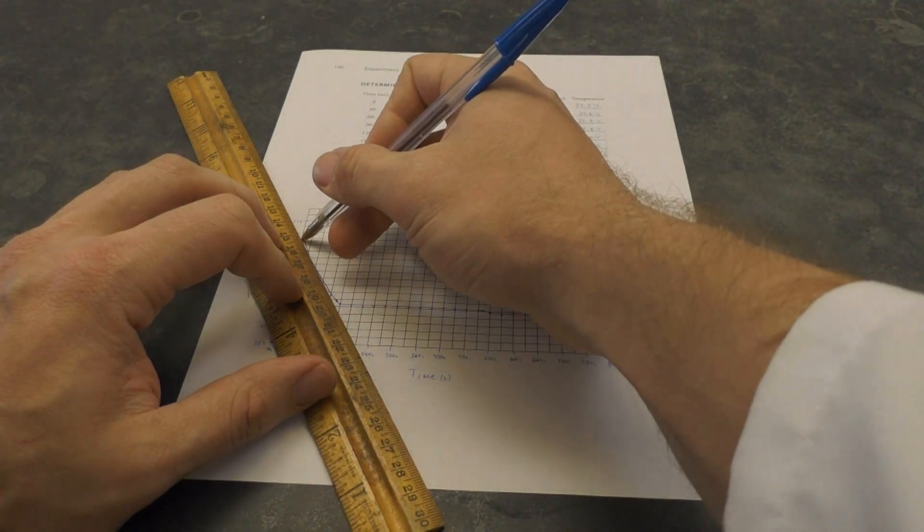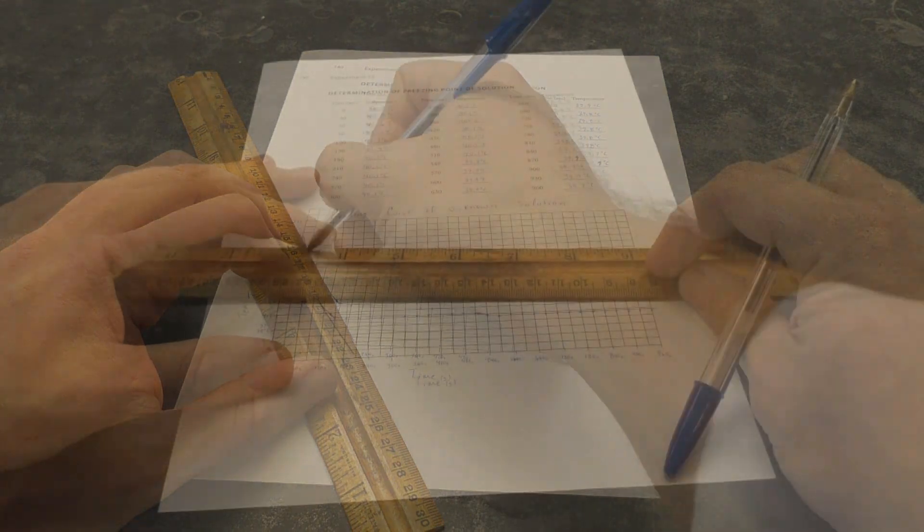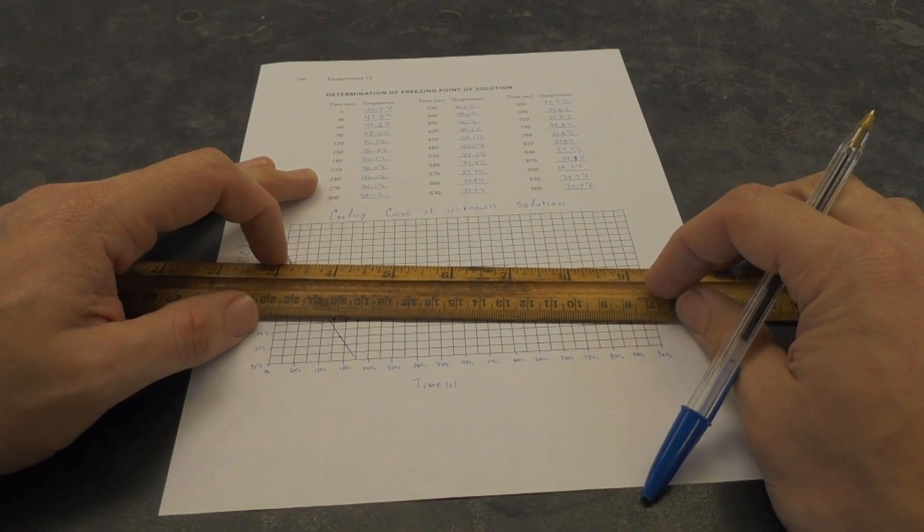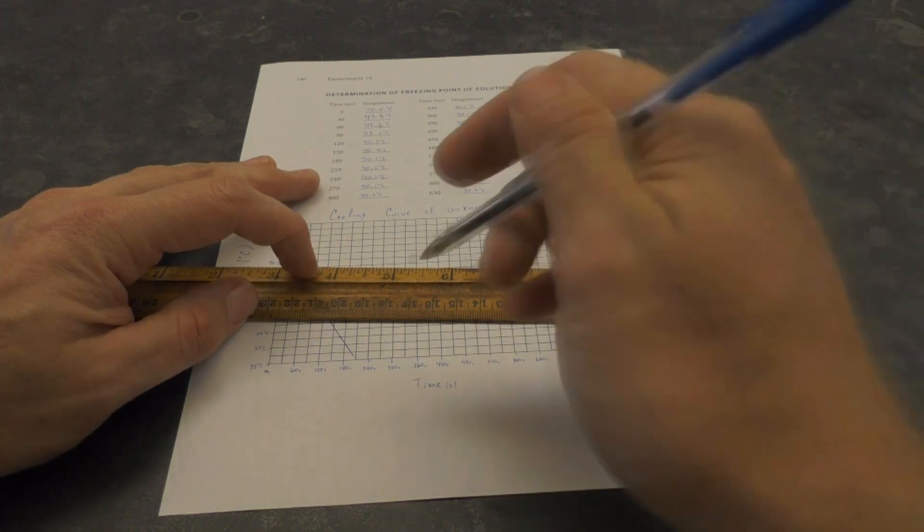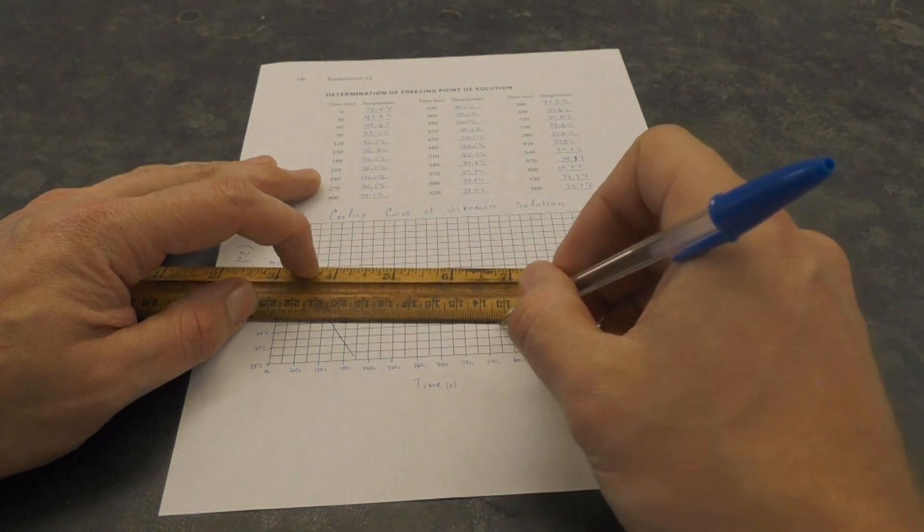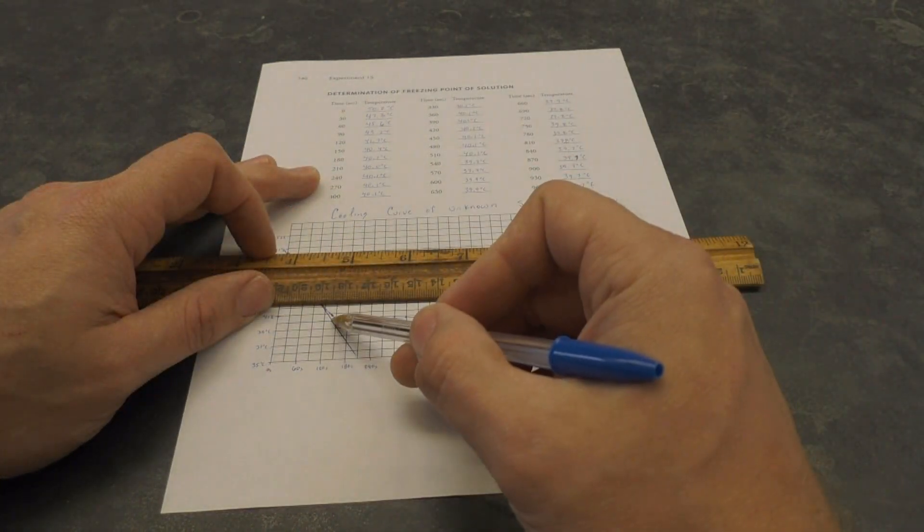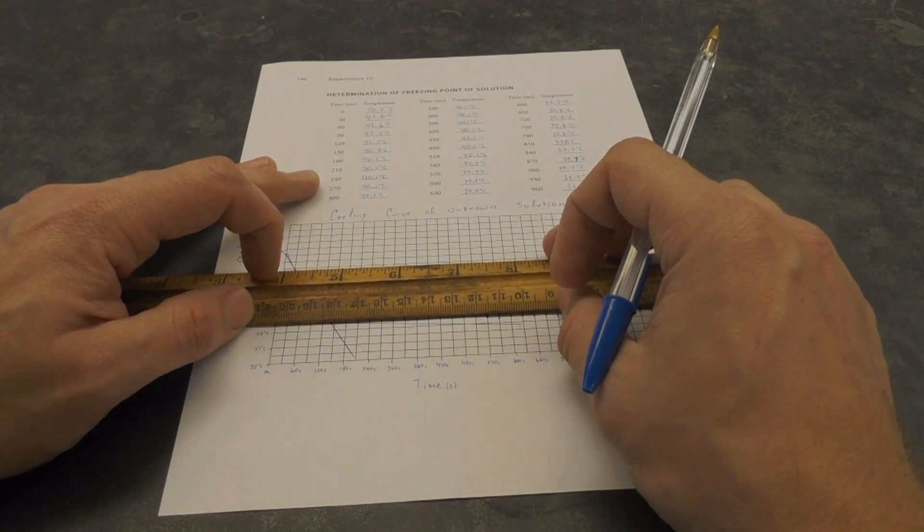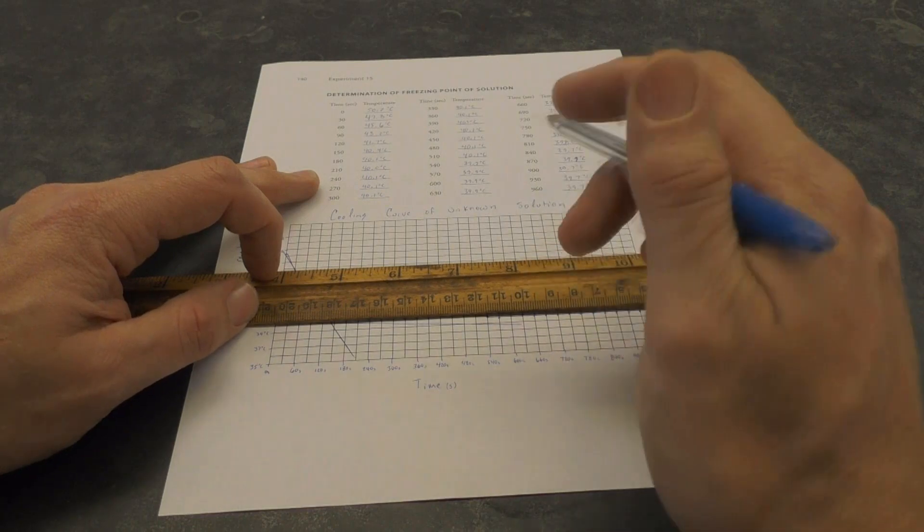First use a ruler to draw a straight line with your initial cooling data on the graph. Then draw a straight line using the downward sloping line of your final points. Finally, determine where these lines cross, and then draw another straight line from this point back to the y-axis. This temperature is the freezing point of your solution.